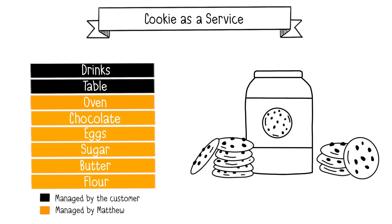The second model is Cookie as a Service, offering ready-to-eat chocolate chip cookies on demand to clients. Compared to the Ingredients as a Service model, here, in addition to shopping, Matthew also takes care of baking the cookies, including putting them in the oven. The client just needs to find a place to eat the cookies and beverages to accompany them, such as a glass of milk.